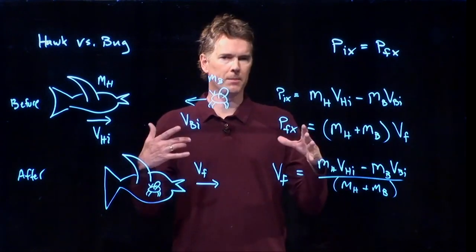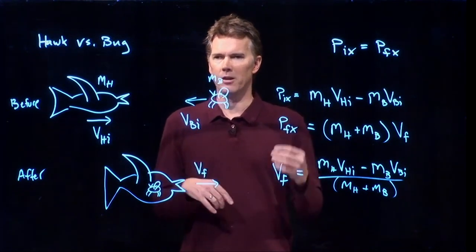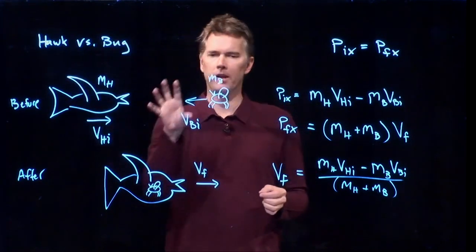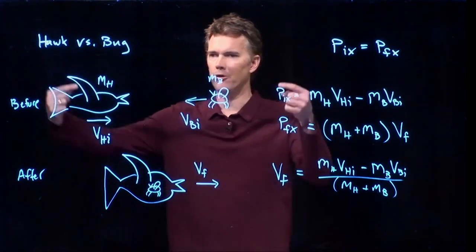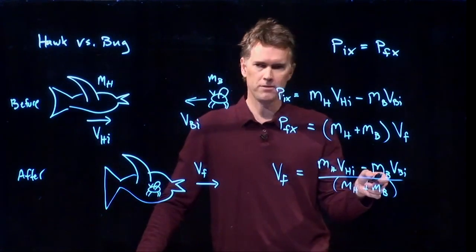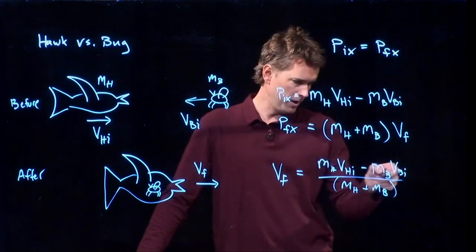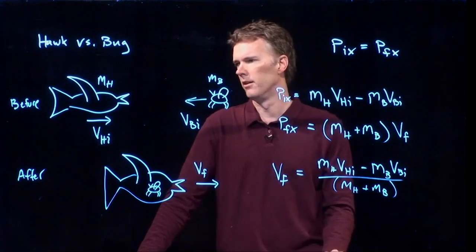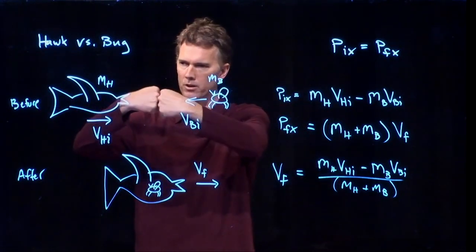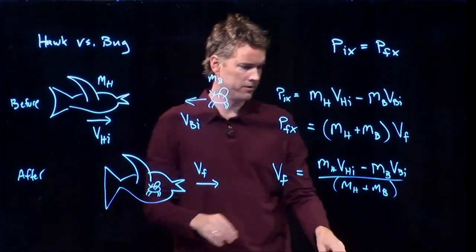So a second ago when we talked about the collision between two cars and we wanted the final velocity to be equal to zero, we had the mass of one was equal to the mass of the other and their speeds were equal. If that was the case here, then mass of the hawk would equal the mass of the bug, speed of the hawk would equal the speed of the bug, numerator goes to zero, final velocity is zero. So if this bug was not a bug but a hawk and they were flying at each other and they hit each other and stuck together, they would come to rest and they'd fall out of the sky.